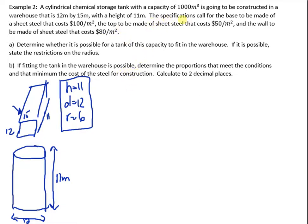The specifications call for the base to be made out of sheet steel that costs $100 per meter squared. The top is to be made out of sheet steel that costs $50 per meter squared, and the wall is to be made out of sheet steel with a cost of $80 per meter squared. So that's my breakdown.